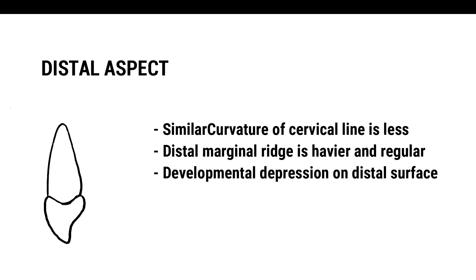Distal Aspect: The general morphology is similar to that of the mesial aspect. Differences observed are: the curvature of the cervical line is less; the distal marginal ridge is heavier and more regular; and the developmental depression on the distal surface of the root is more pronounced than on the mesial side.